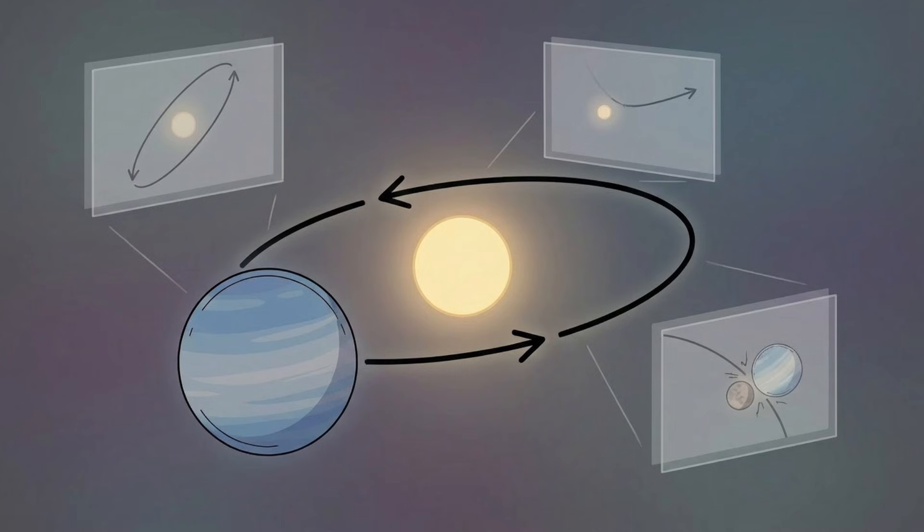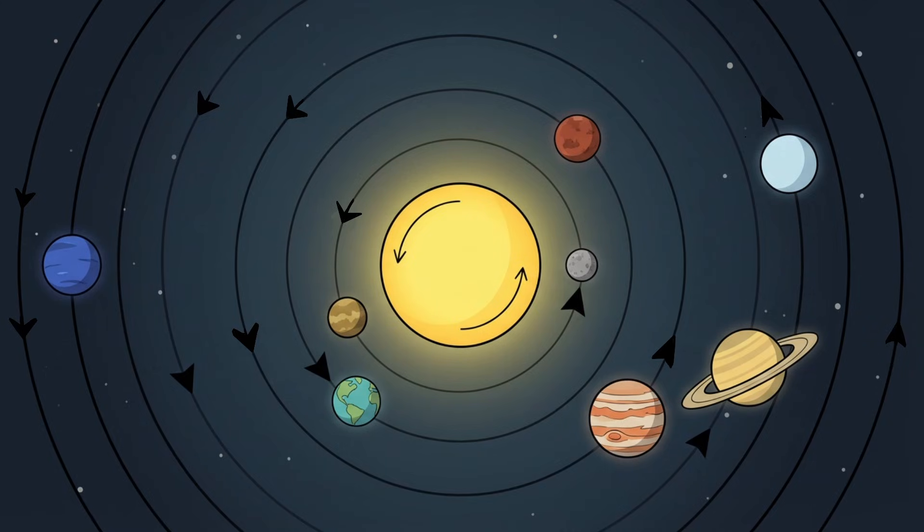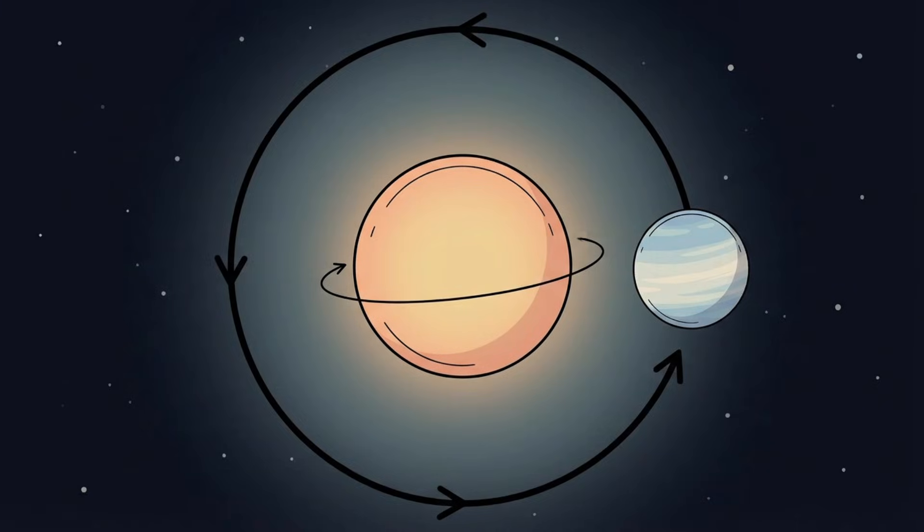WASP-17b is weird because it preserves evidence of that chaos. Its orbit acts like a fossil record, showing that planetary systems can be disrupted long after they form. Planets are expected to follow the rotation of their stars. This one does the opposite. Astronomers are not just observing a gas giant. They are observing a planetary system that failed to stay orderly and never corrected itself.